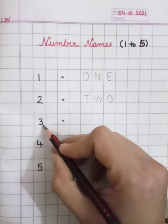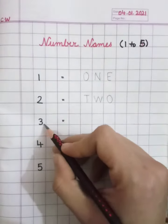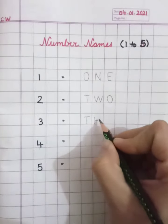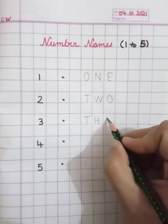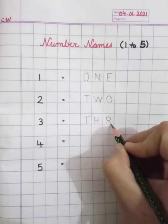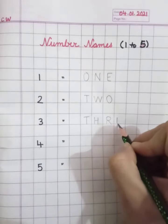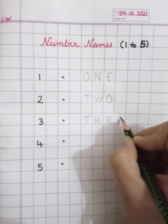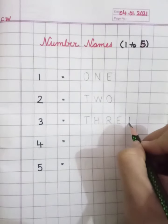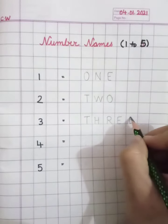And then this is number three. And what is the spelling of three? T, H, R, E, E, three. Good.